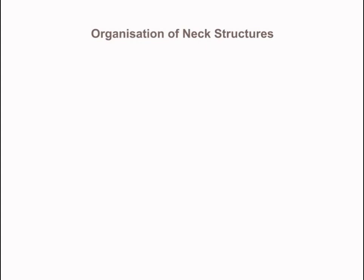In this short video tutorial, we're going to consider the organisation of the structures within the neck. The neck acts as a conduit or passageway for quite a number of structures running between the head and the thorax. This includes structures like blood vessels, arteries and veins, nerves, but also important elements of the respiratory and gastrointestinal system, like the larynx and the trachea and the pharynx and oesophagus. The arrangement of these structures within the neck is perhaps most easily considered by looking at the neck in cross-section, as this really helps us to appreciate the anatomical arrangement and the relationships of the different structures.